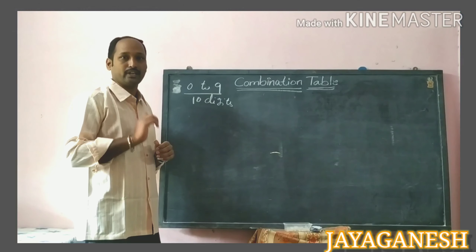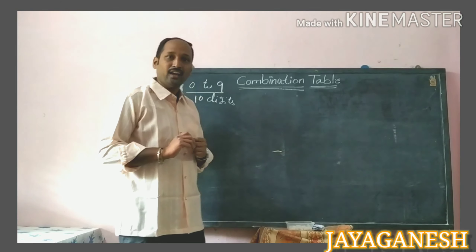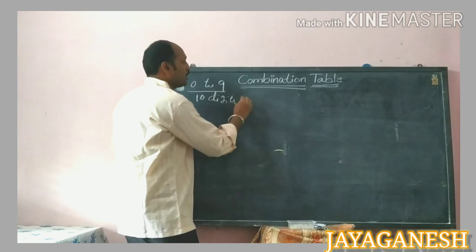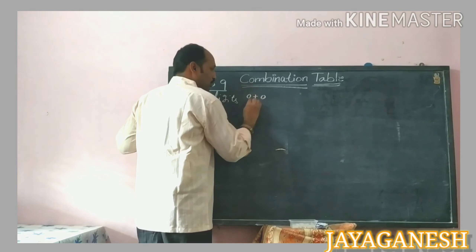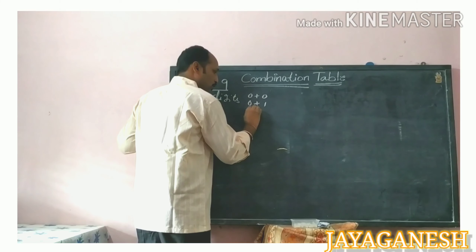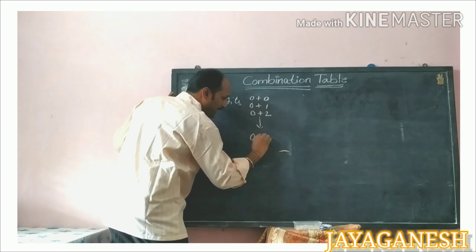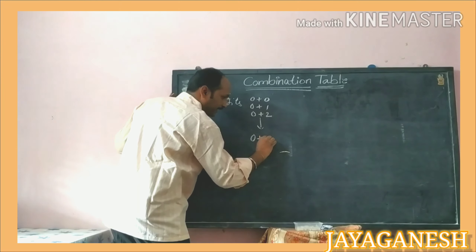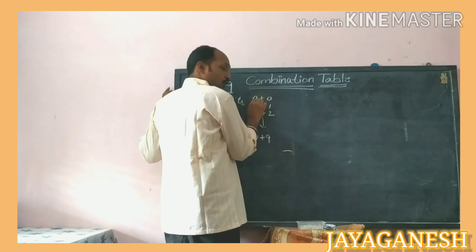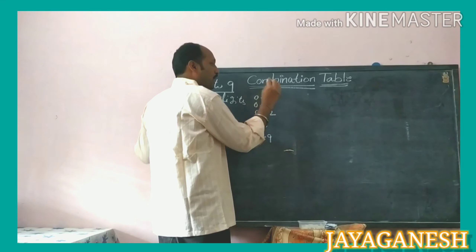I told you previously how the numbers came, how the calculations came. In the calculation, the first one is addition. See, the combination table is nothing but an addition table — from 0 plus 0, 0 plus 1, 0 plus 2, till it will go to 0 plus 9.